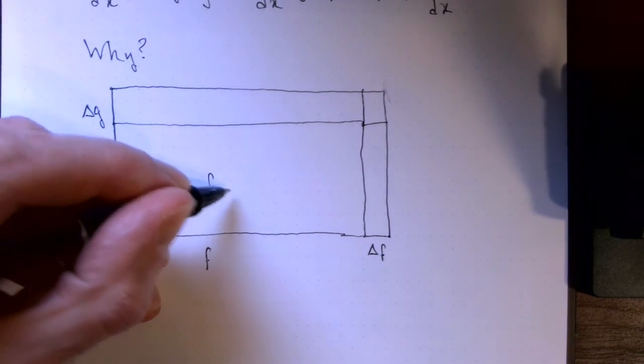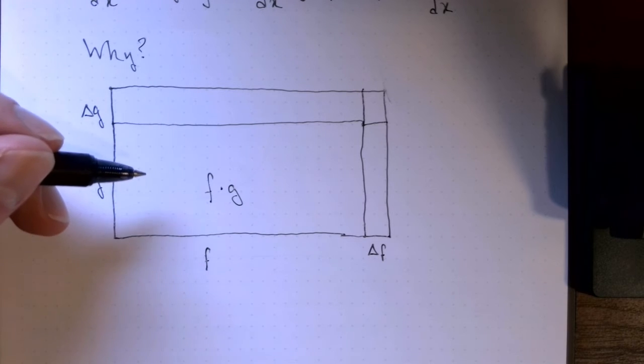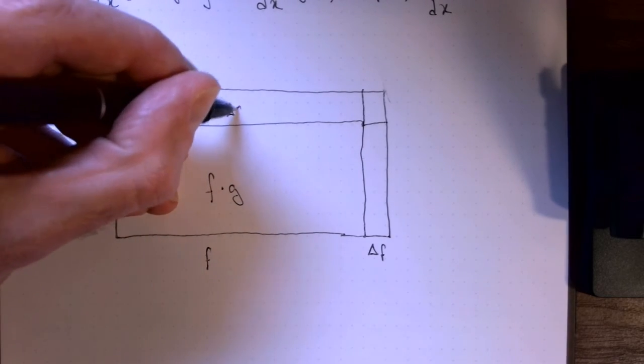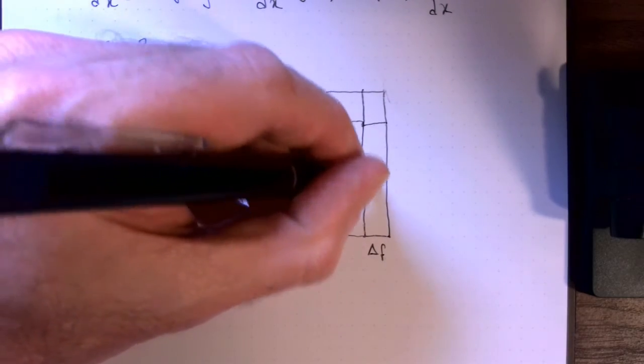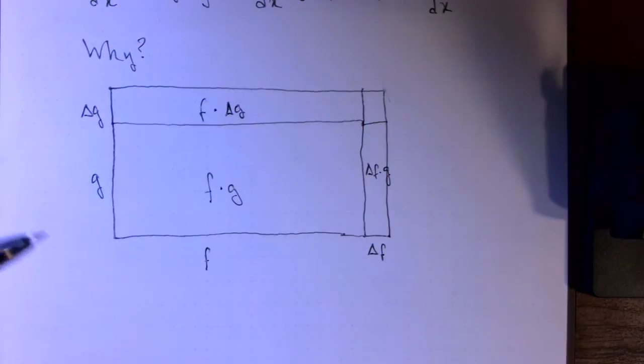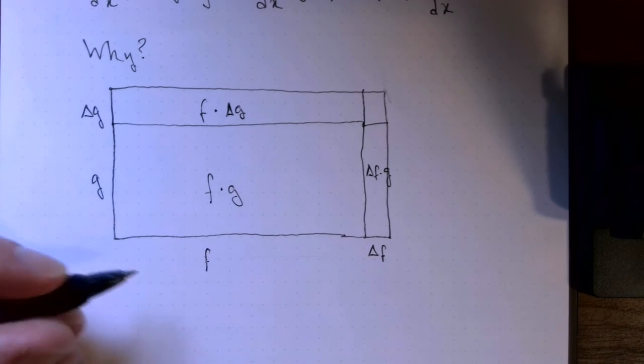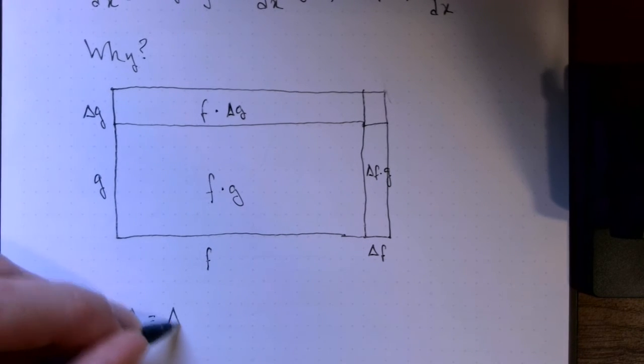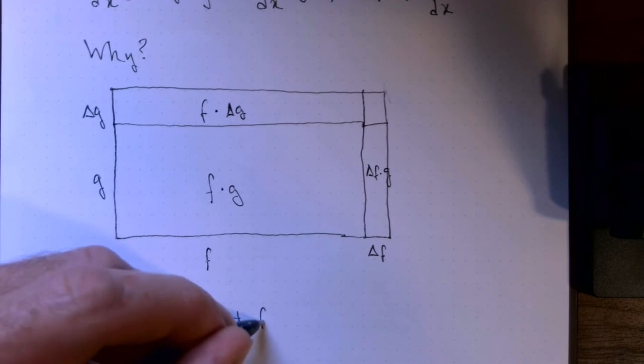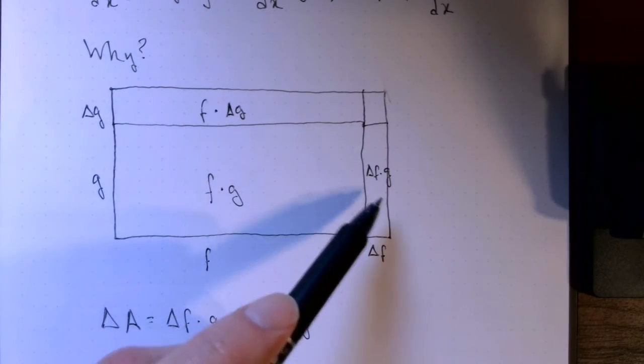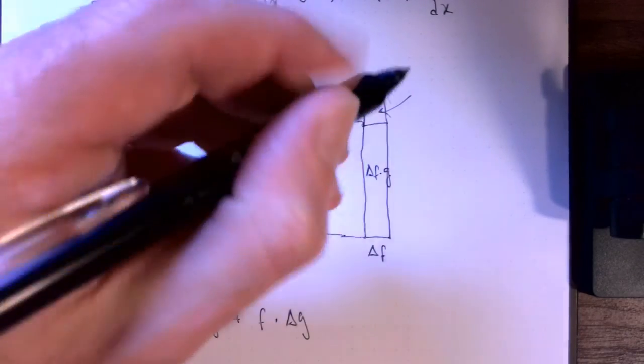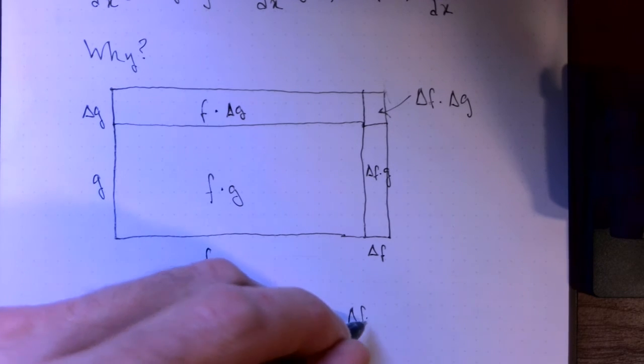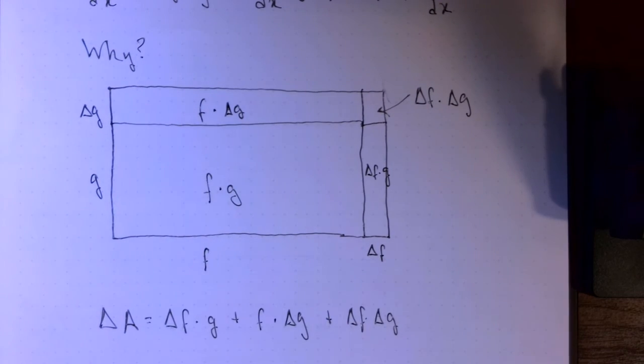So this area is F times G, the area of the main original rectangle. This thin piece on the top is F times delta G. And this is delta F times G here on the right-hand side. So the change in the area is delta F times G plus F times delta G. So you've got this plus this. And then this little corner piece right here, which is delta F times delta G.